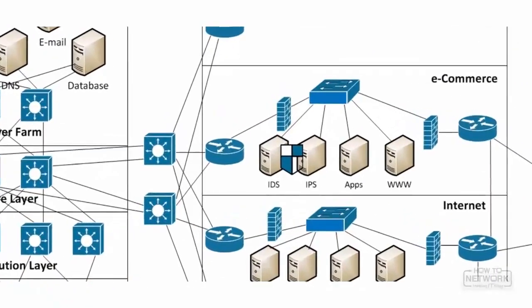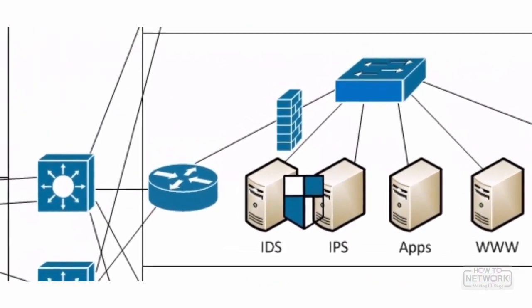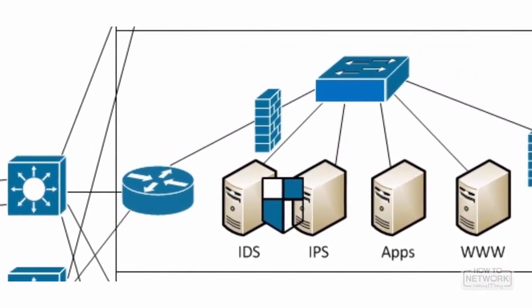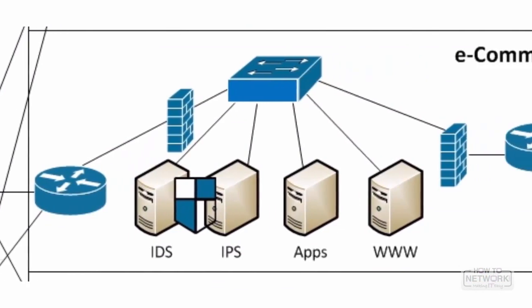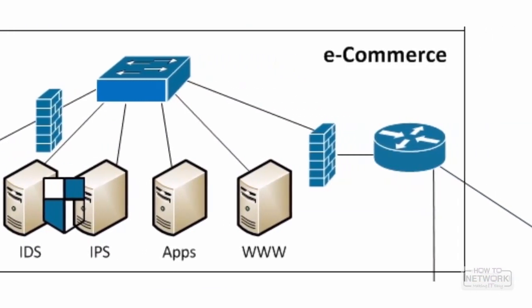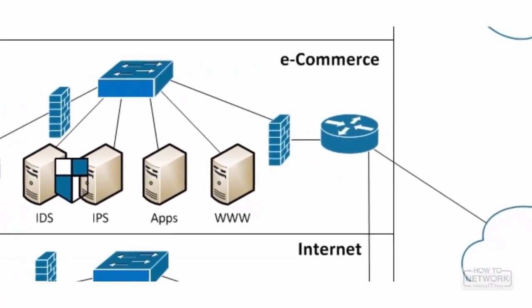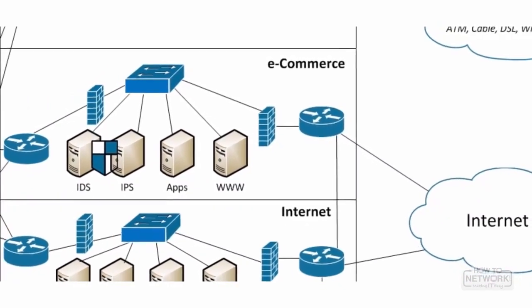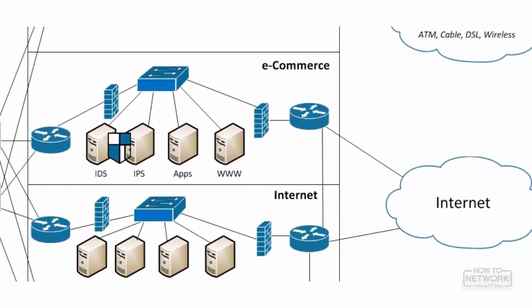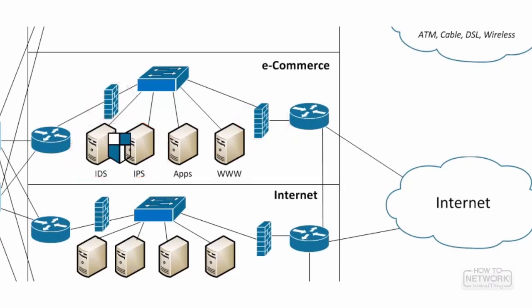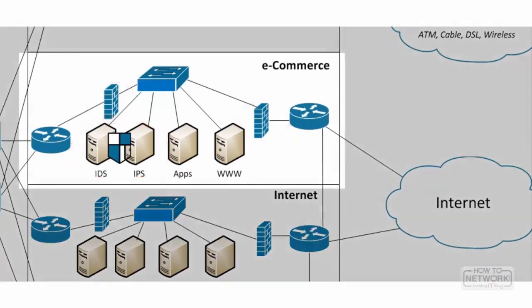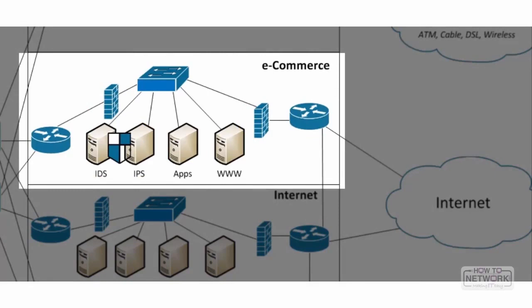The e-commerce block is the face of the company to the outside world — a storefront for internet users to transact with the business. This needs to be a highly secure area since those who enter it are on the edge of your private network, so security plays a key role with intrusion detection equipment and firewalls ensuring no unwanted traffic gets into the internal network. This block is normally comprised of web servers, application servers, firewalls, IDS, and IPS.